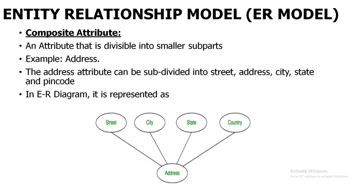The next one is composite attribute. Composite attribute means for an entity, address is an attribute, but that address can be divided into multiple values. Address is one single value, but it can be divided into multiple values — for example, street, city, state, country, street number, and house number. All of these will be the composite attributes of the entity.